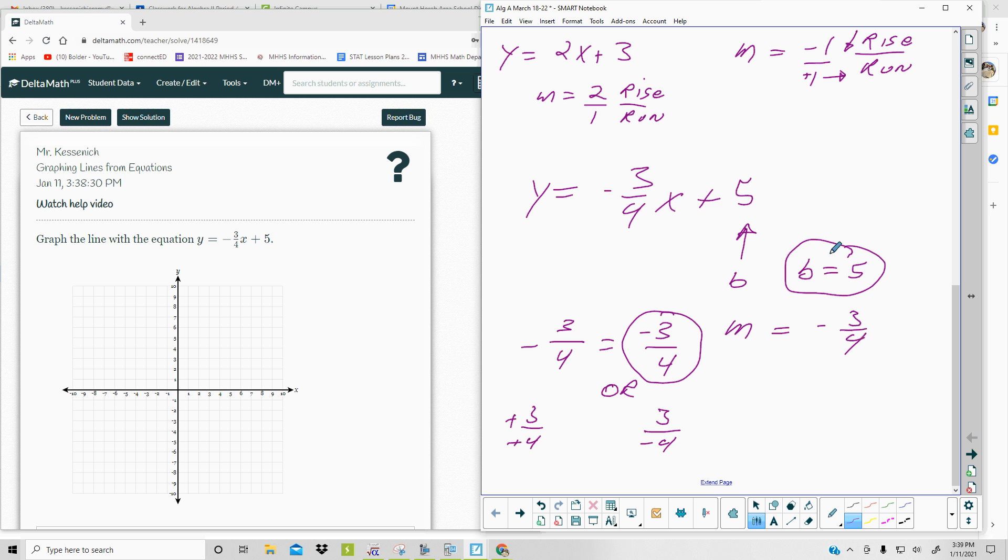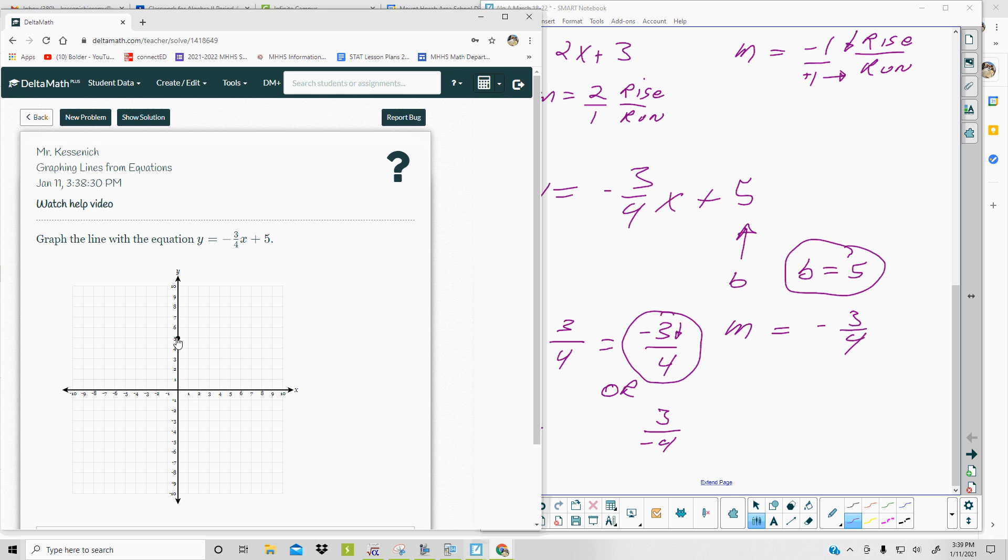Y-intercept is 5, slope is negative 3/4. So remember, a negative number on top means you go down rather than going up. So the y-intercept is 5, negative 3 goes 1, 2, 3 down, and then it's a positive 4 in the bottom, so 1, 2, 3, 4, and there's your line.